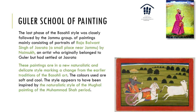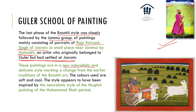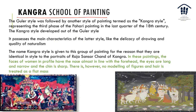The Guler school is from Jammu. A notable work is the portrait of Raja Balwant Singh of Jasrota by Nainsukh, who originally belonged to Guler and then moved to Jasrota. The paintings are naturalistic, with a delicate style marking a change from the earlier Basoli tradition. Interestingly, one painting shows the king killing a cow — a reminder that what is taboo today may not have been so then. Colors are soft and cool, inspired by the Mughal naturalistic style of the Muhammad Shah period.